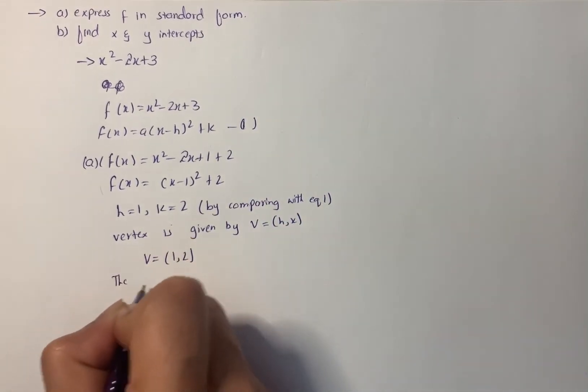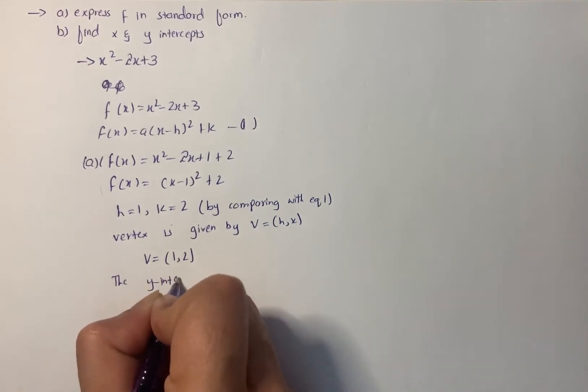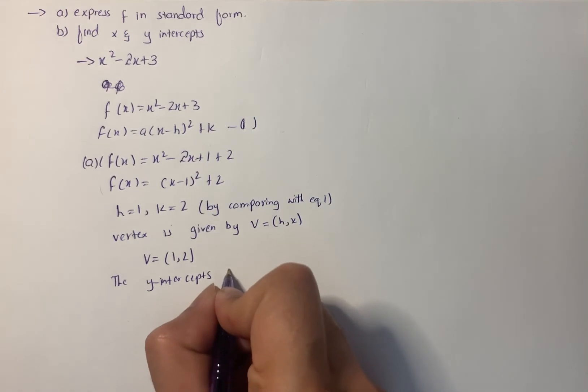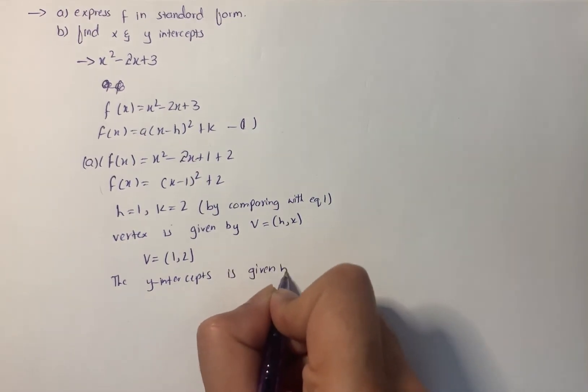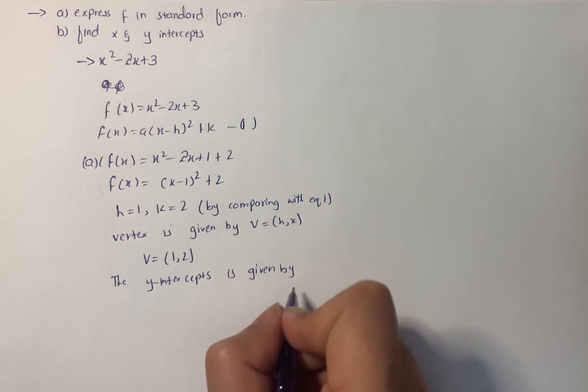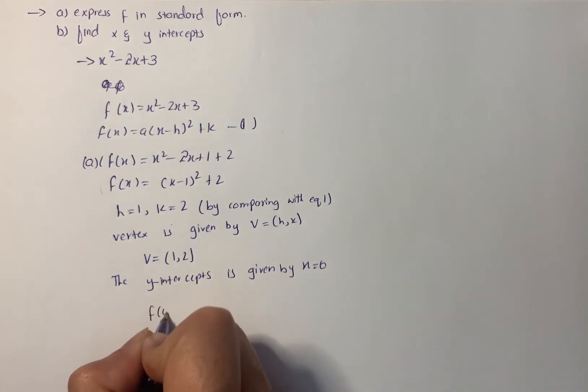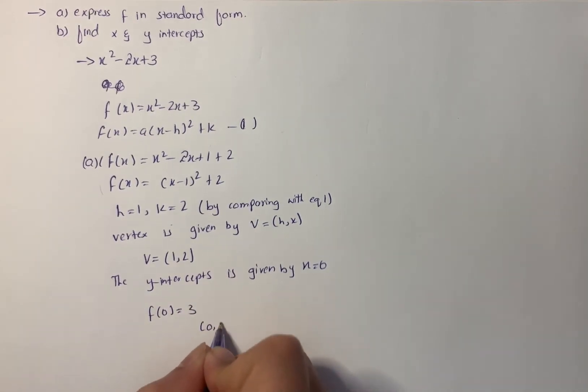The y-intercept is given by setting x = 0. We have f(0) = 3, so the y-intercept is (0, 3).